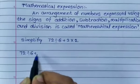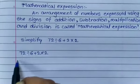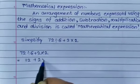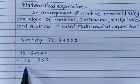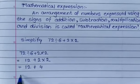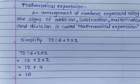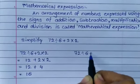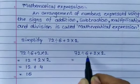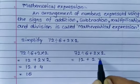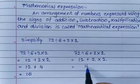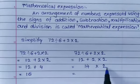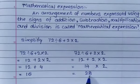For example: 72 divided by 6 plus 2 into 2. One method gives: 72 divided by 6 equals 12, plus 2 into 2 equals 4, so 12 plus 4 equals 16. Another method gives: 72 divided by 6 equals 12, plus 2 equals 14, into 2 equals 28. So we get two different answers. Why? Because the order in which operations were carried out was different.